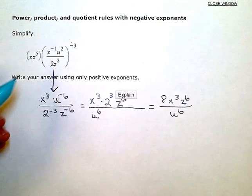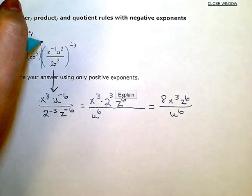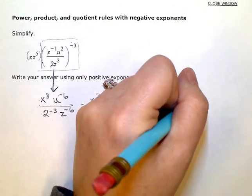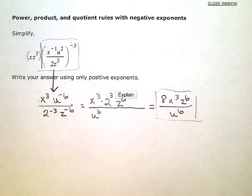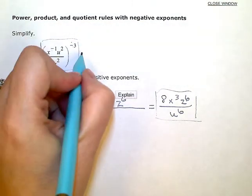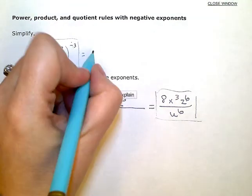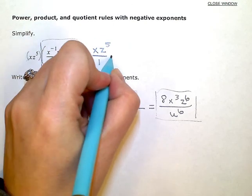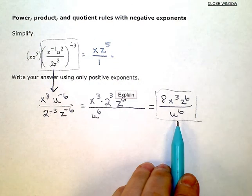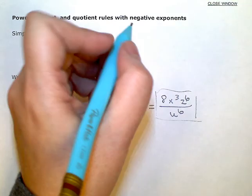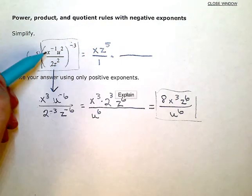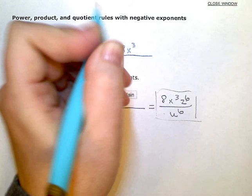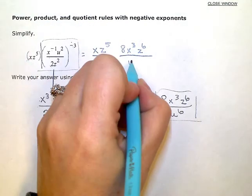Now, I can take this entire expression and replace it with this more simplified expression. So now, I'm going to have xz to the 5th, and I'm going to put it over 1 and make it a fraction, since this one's a fraction, just so I can keep my numerators and denominators lined up together. And then I'm going to replace this 2nd one with this more simplified version. So 8x cubed times z to the 6th all over u to the 6th.